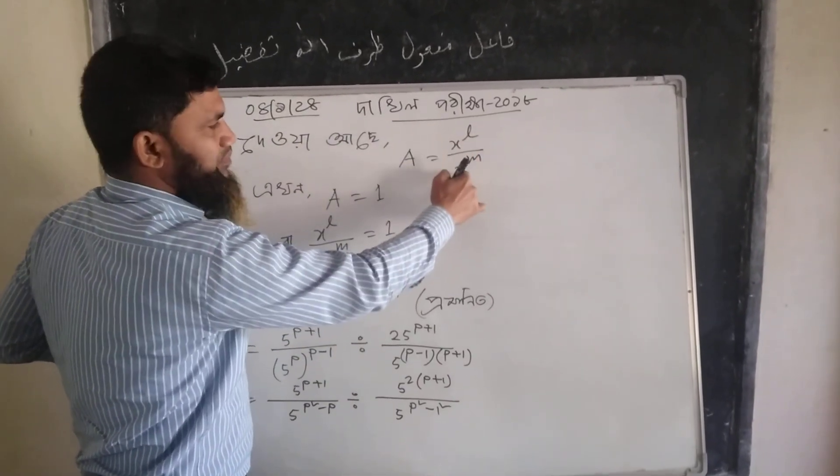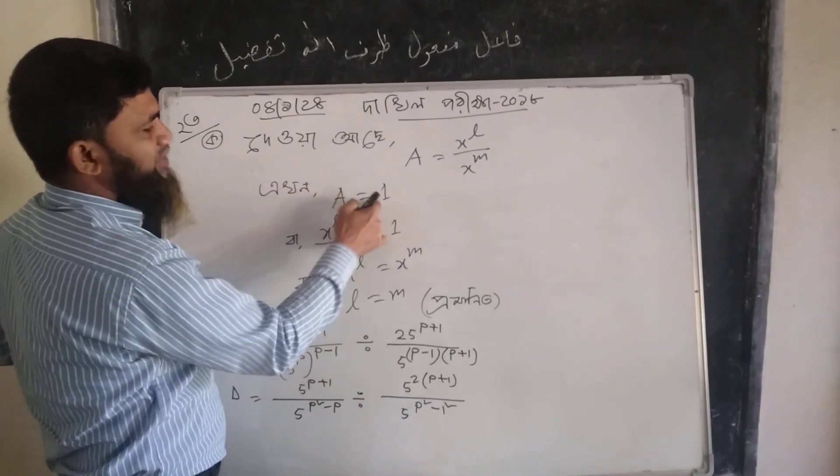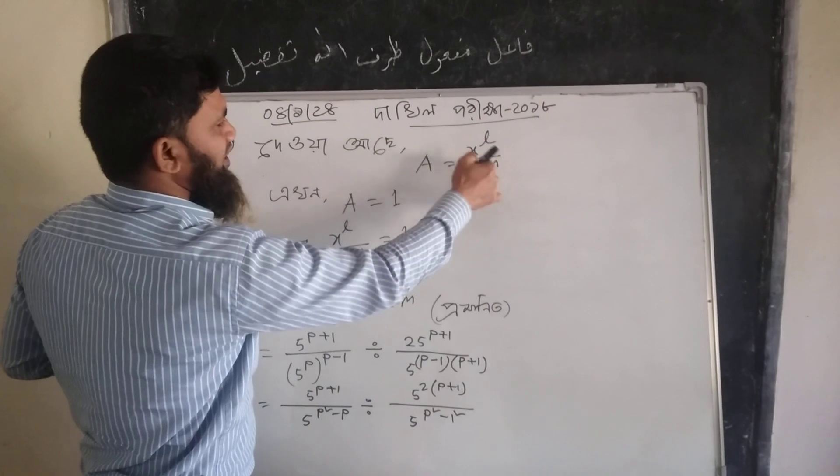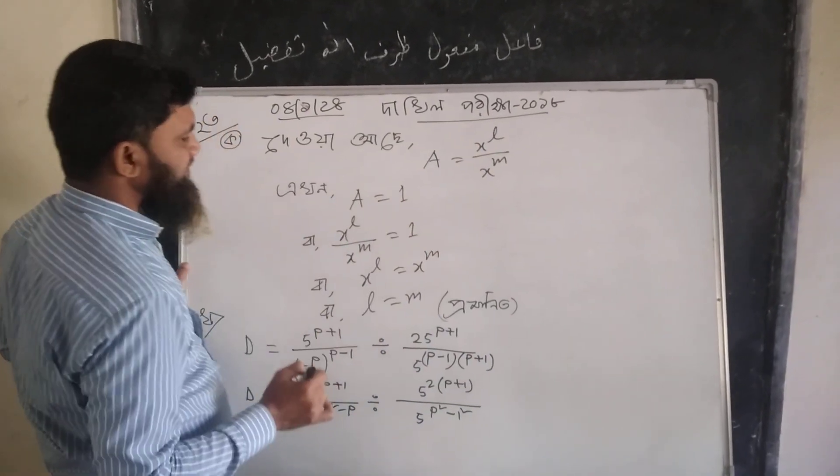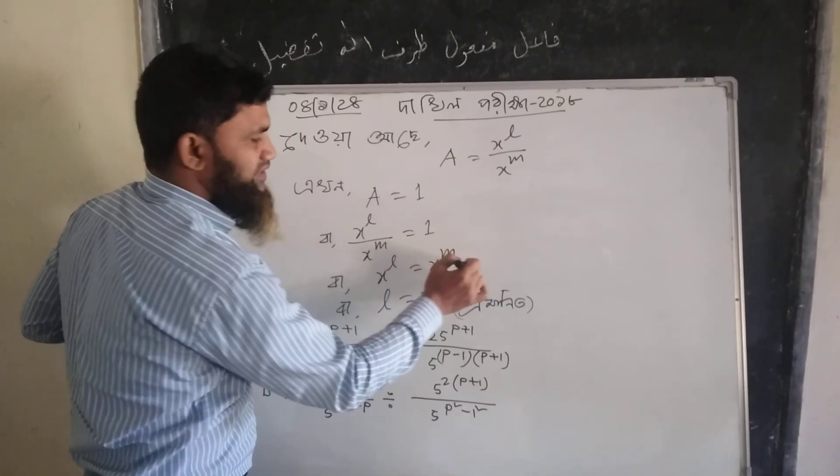A1 x2l by x2m. First, A1. What is A1? Then A1 is x2l, x2m. Then we have x2l to x2l.